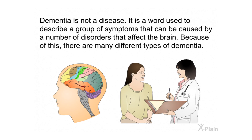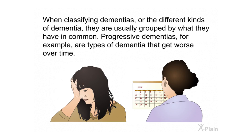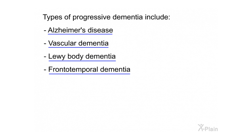Dementia is not a disease; it is a word used to describe a group of symptoms caused by a number of disorders that affect the brain. Because of this, there are many different types of dementia. When classifying dementias, they are usually grouped by what they have in common. Progressive dementias are types that get worse over time. Types of progressive dementia include Alzheimer's disease, vascular dementia, Lewy body dementia, and frontotemporal dementia.